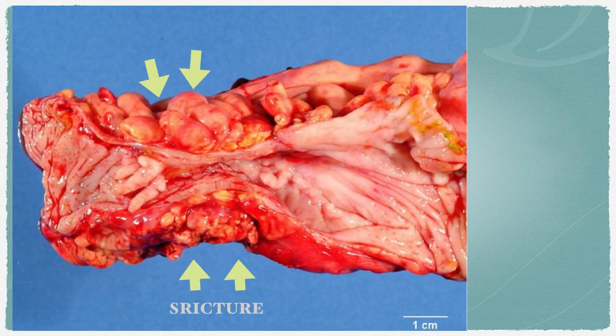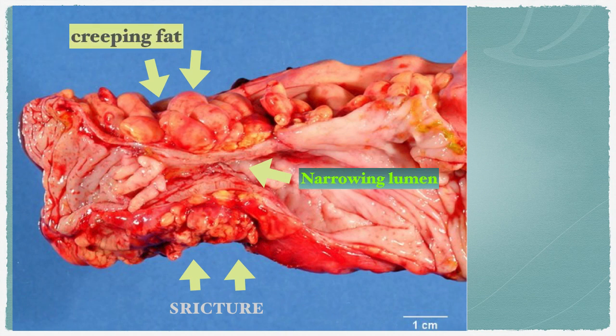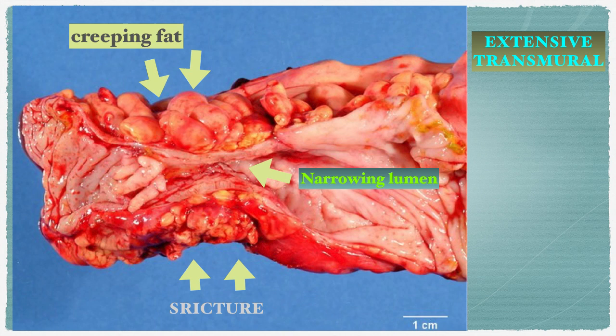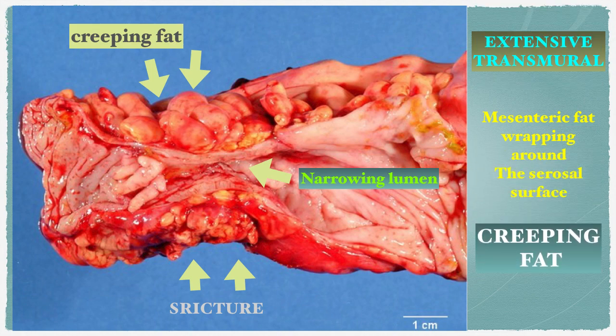This is another example of stricture formation from a fresh resected bowel specimen. You can easily appreciate the narrow lumen here, but what I want to emphasize is the creeping fat that accumulates at the outer part of the stricture area. This indicates that extensive transmural inflammation has occurred, causing the mesenteric fat to wrap around the serosa surface — leading to the formation of creeping fat. This is what happens in Crohn's disease.